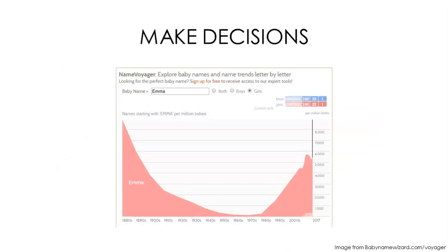Visualizations can help us make decisions. This is a screenshot of the Name Voyager tool on babynamewizard.com. You can type in names and see popularity graphs for each one, based on data from the Social Security Administration. If you have small children, or if you're just nerdy about naming trends like I am, you've perhaps noticed that Emma has been a very popular name in the last few years. When I looked at this graph, I thought the big generational gap was really interesting — maybe people are naming their daughters after great-grandparents. This could be an example of using data visualization to inform a very personal decision.